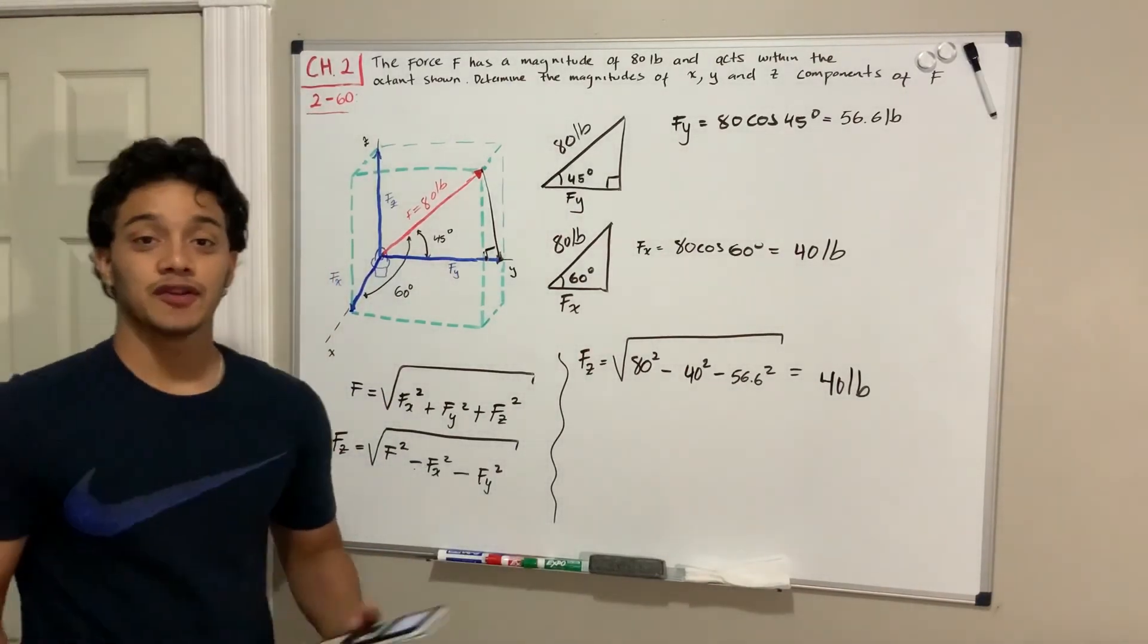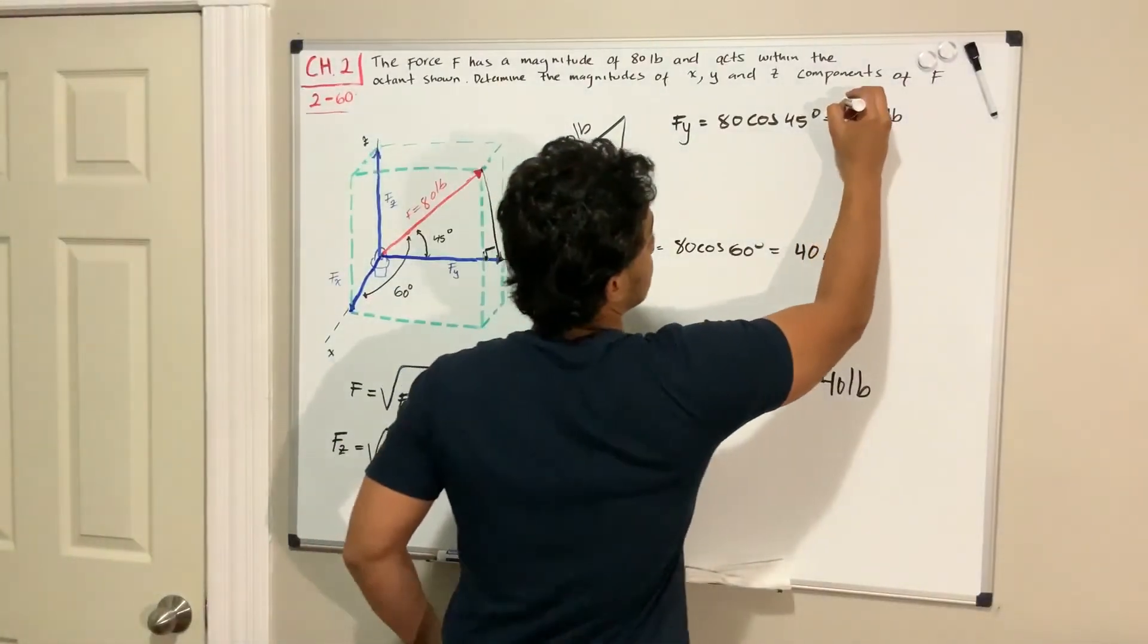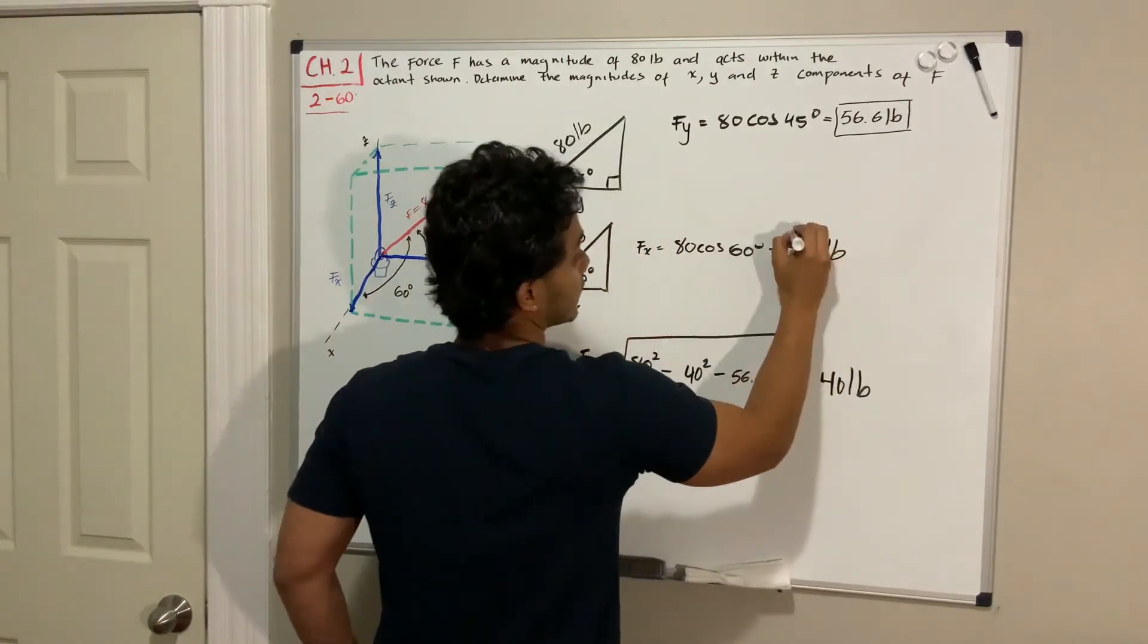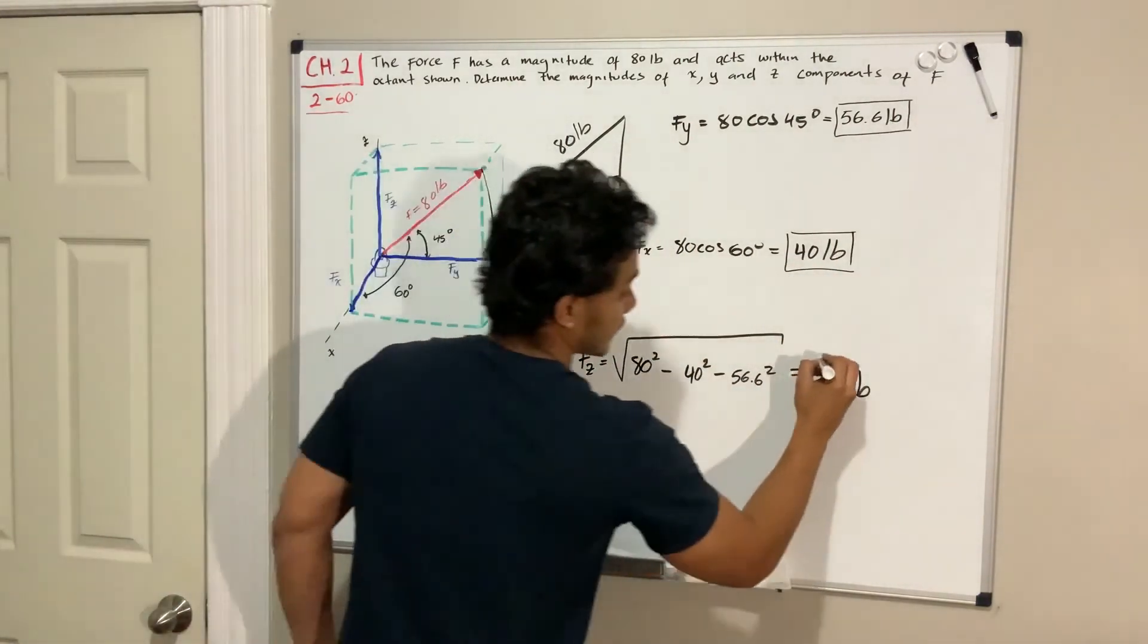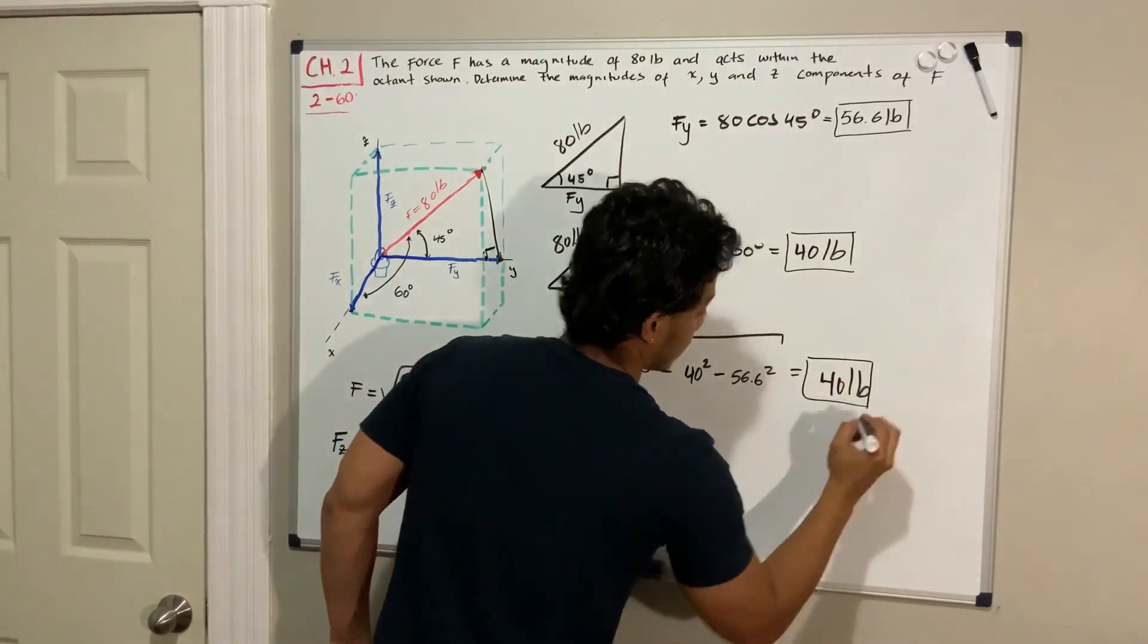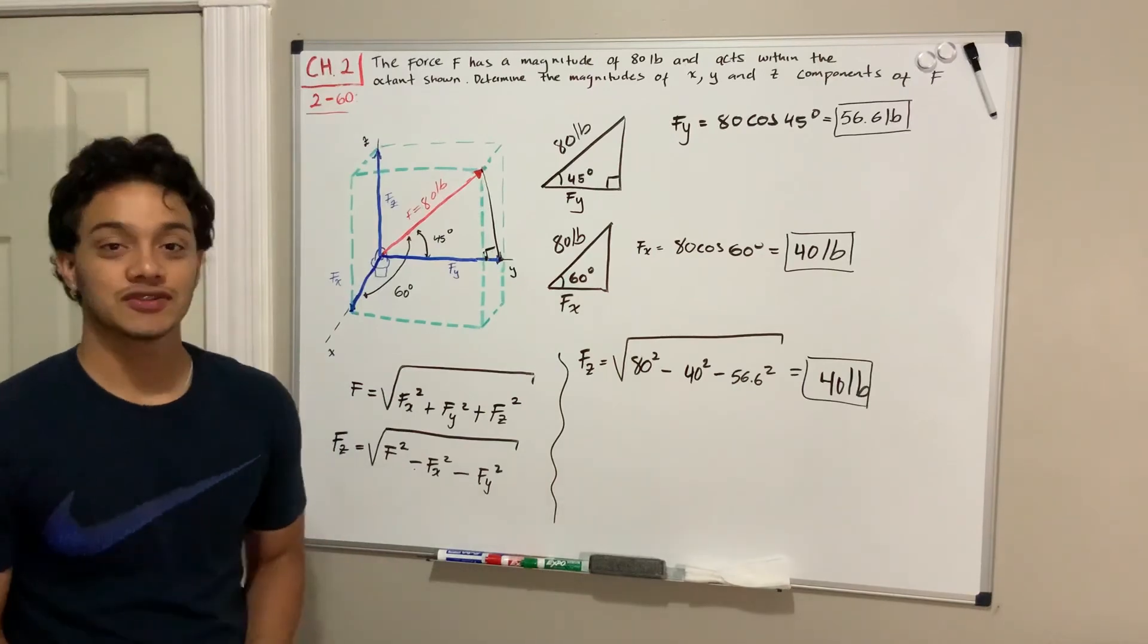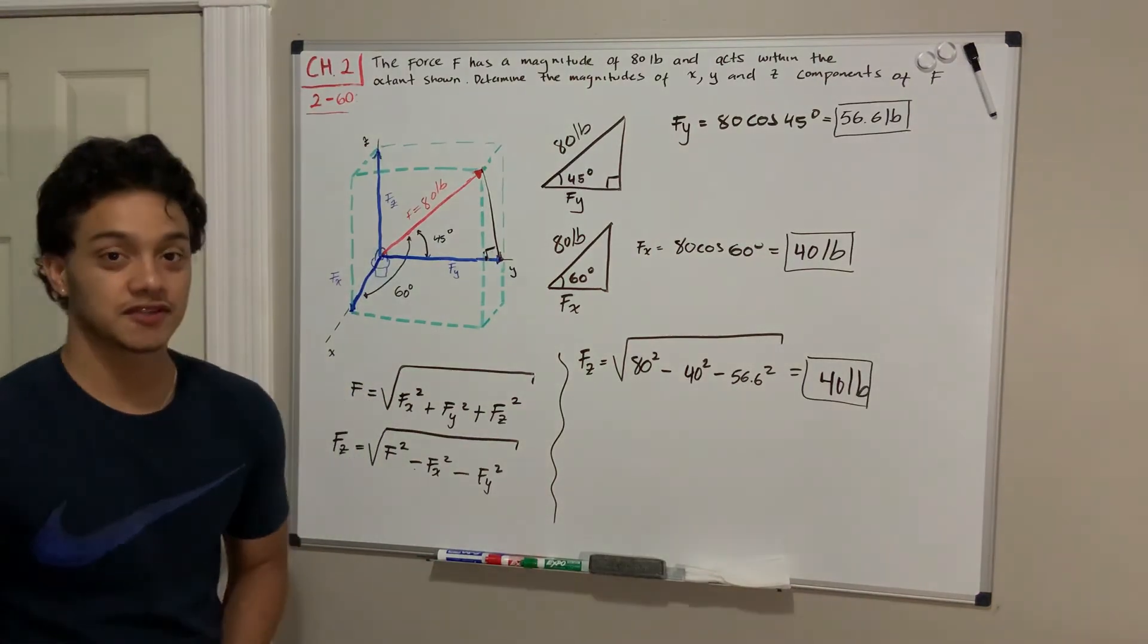So that was it for the video. We got our three answers, which is 56.6 pounds for F of Y, 40 pounds for F of X, and 40 pounds for F of Z. Thank you guys for watching, if you got any question or any suggestion, please comment down below, and I'll see you guys in the next video.